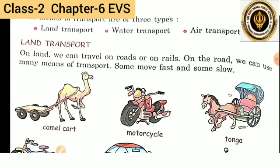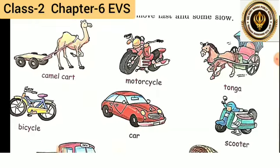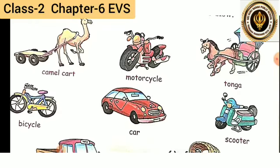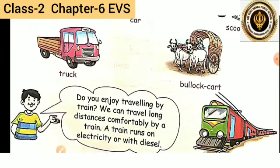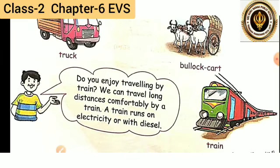First we will look at land transport. On land we can travel on road or on rails. On the road we can use many means of transport. Mostly we use these types of land transport like cart, motorcycle, thangas, bicycle, car, scooter, truck, bullock cart, and train also.